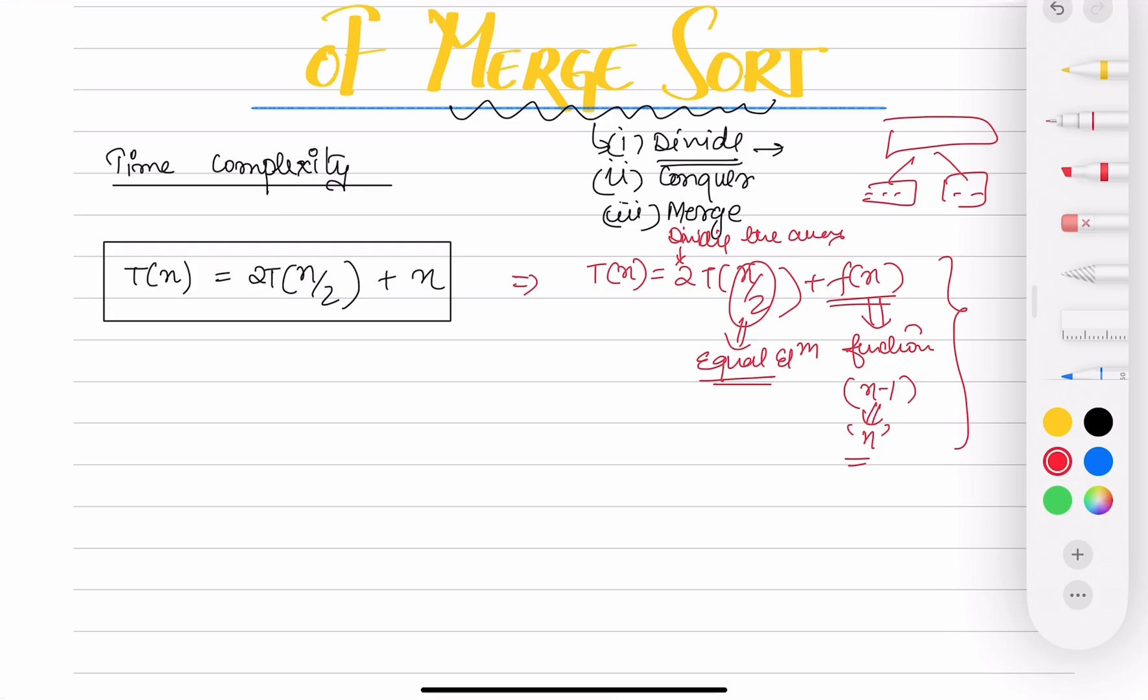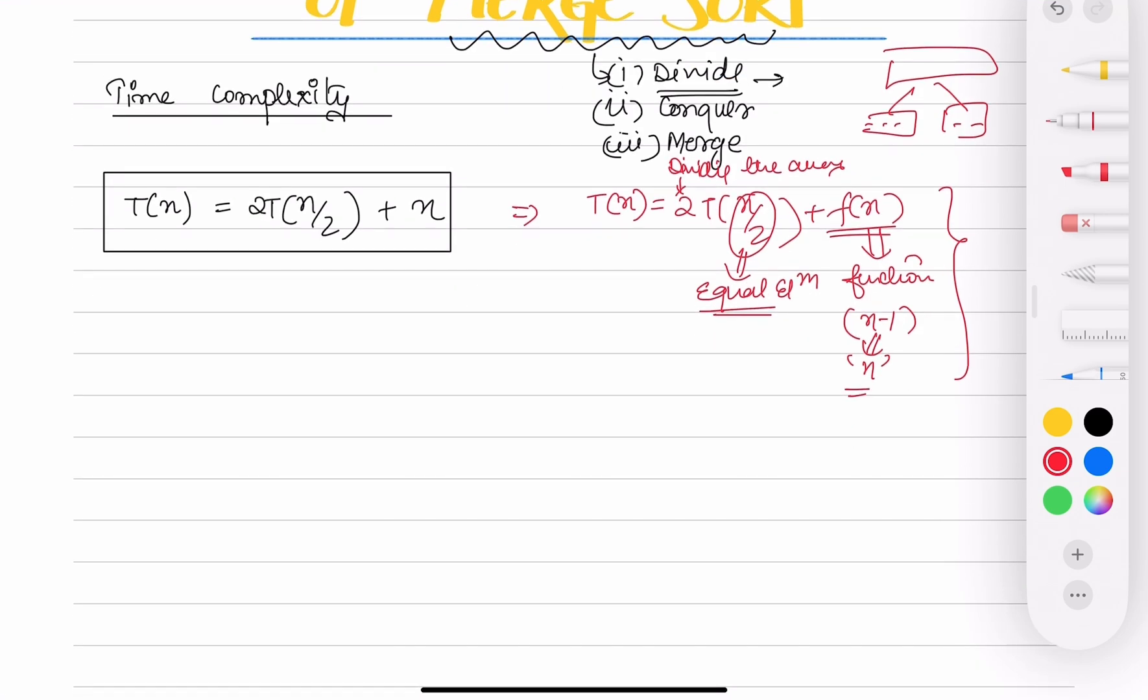Coming back to this, since we are dividing the array, time taken for the complete algorithm is nothing but time taken for two equal parts with equal elements, and that is the minimum number of comparisons we are going to do while merging it back. Make sense?